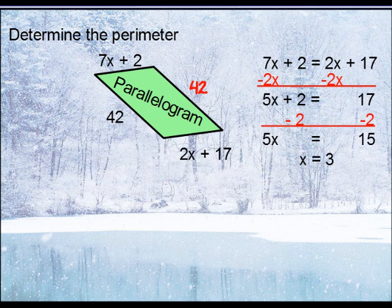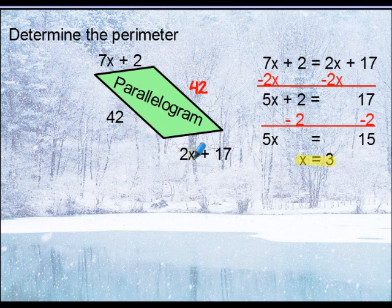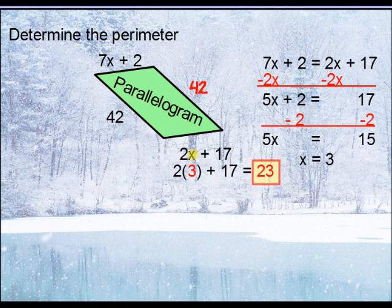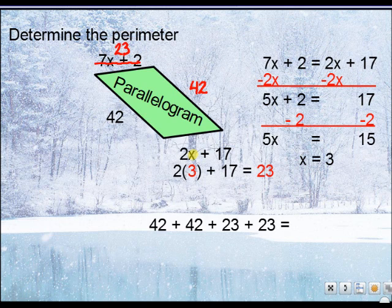Once you've solved for x, a lot of students will think 3 is the final answer — but they're neglecting that you're not asked to find x; you want the perimeter. That means you need the length of all four sides and add them together. The right-hand side is 42. We plug x = 3 into the bottom expression: 2 times 3 plus 17, which gives us 23. The top is also 23. So 42 plus 42 plus 23 plus 23 gives us a perimeter of 130.